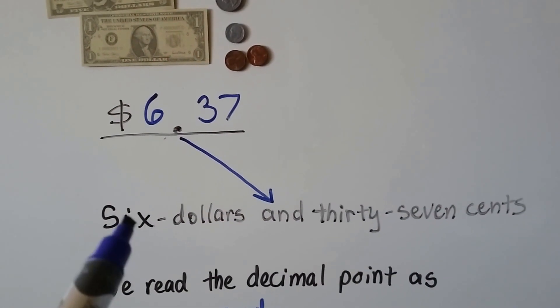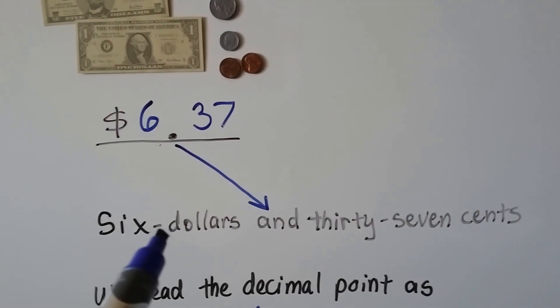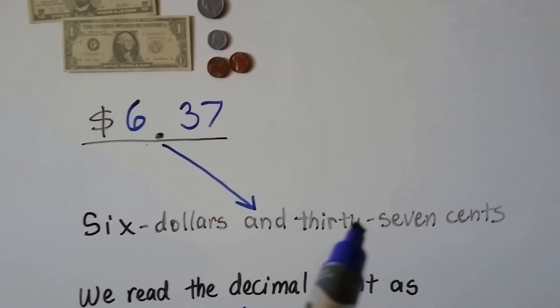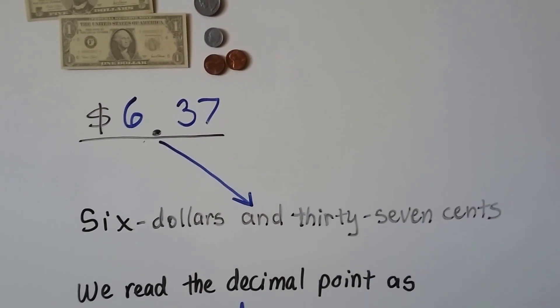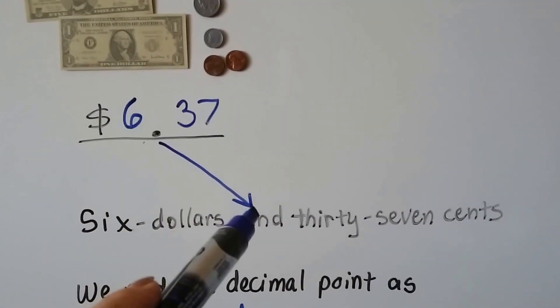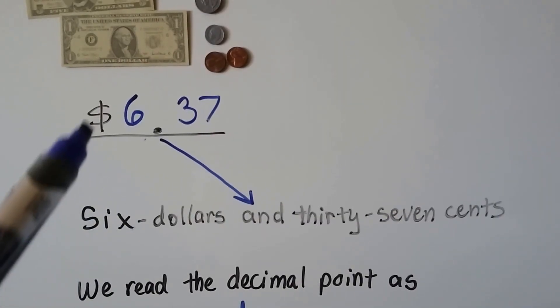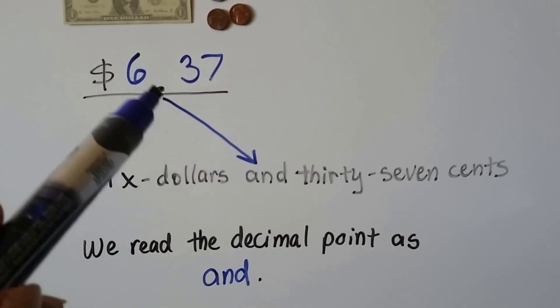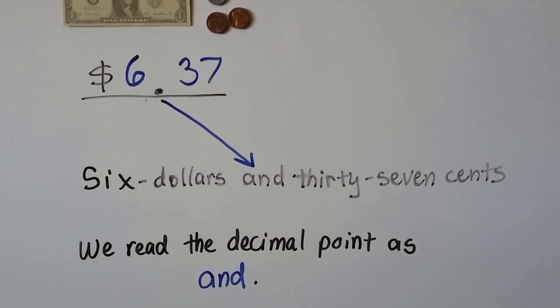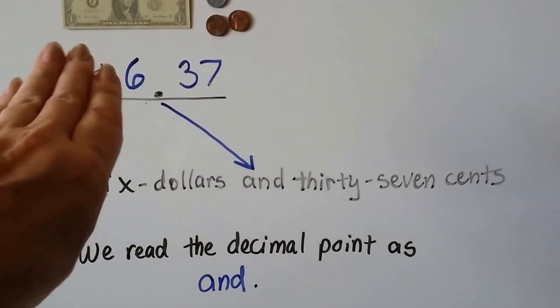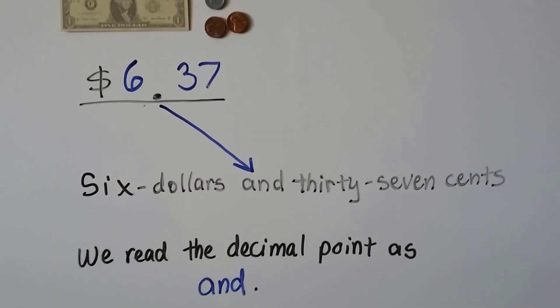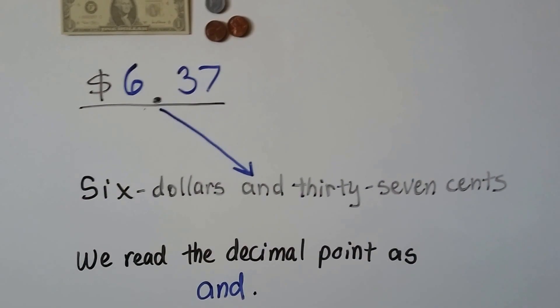If we wrote this, it would be 6 dollars, with a hyphen in between the 6 and the dollars, and 37, with a hyphen in between the 30 and the 7 cents. This decimal point is read as the word AND. We have our dollar sign here. We read the decimal point as AND. Even in regular math, even if it's just a decimal number, you read the decimal point as the word AND. 6 dollars and 37 cents.